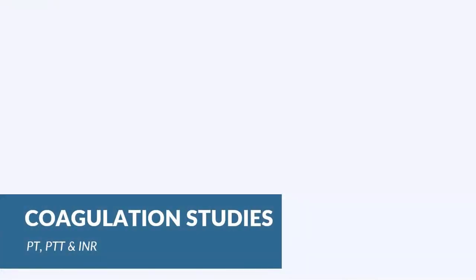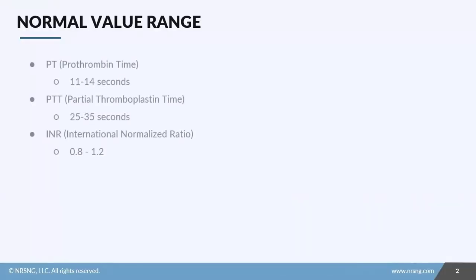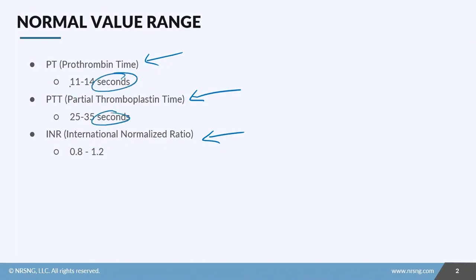In this lesson we're going to take a look at coagulation studies. To understand how coagulation studies work, we evaluate three things: PT, which is prothrombin time; PTT, which is partial thromboplastin time; and INR, which is international normalized ratio. The first two are measured in seconds — PT is 11 to 14 seconds and PTT is 25 to 35 seconds.